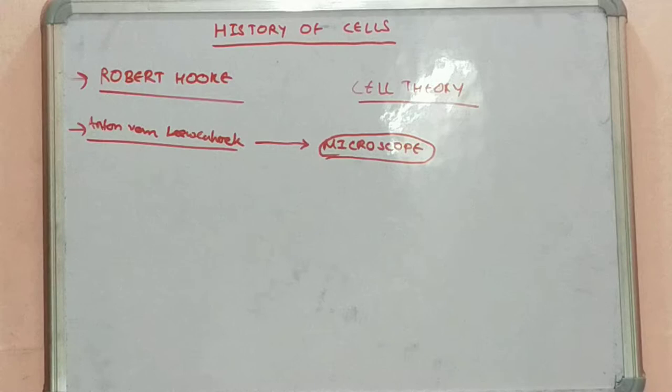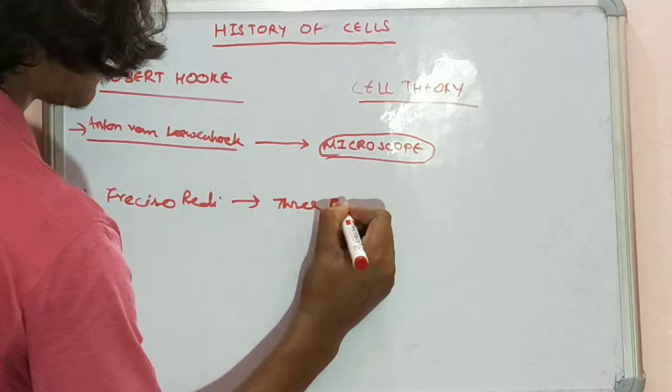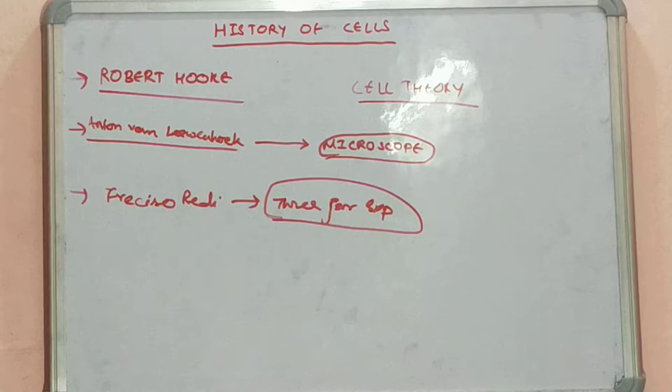The next person to mention is Francisco Redi, who, with the help of the three jar experiment, explained the concept that would challenge spontaneous generation — something I'll explain a little bit later in this video.